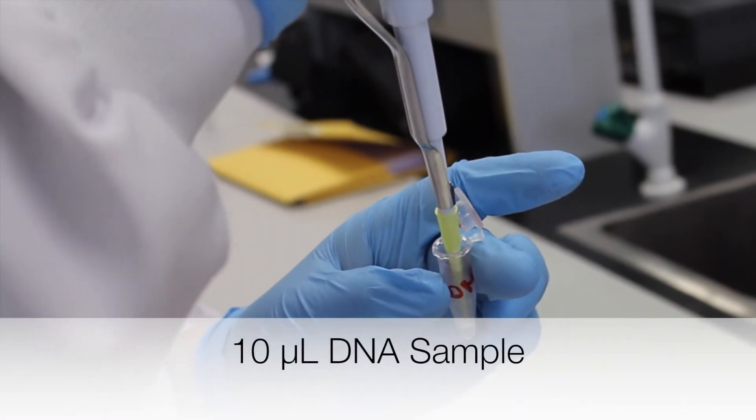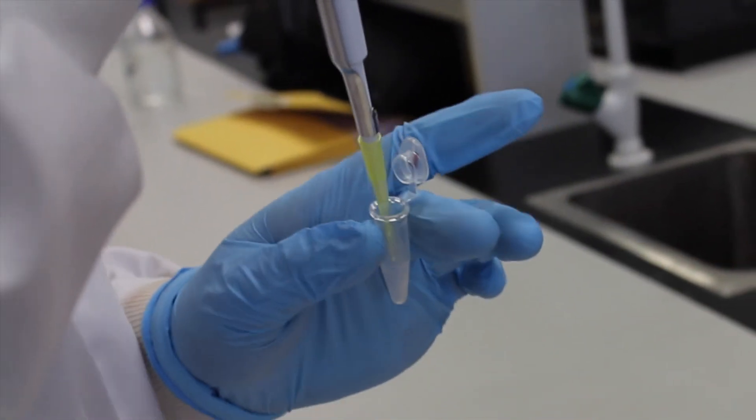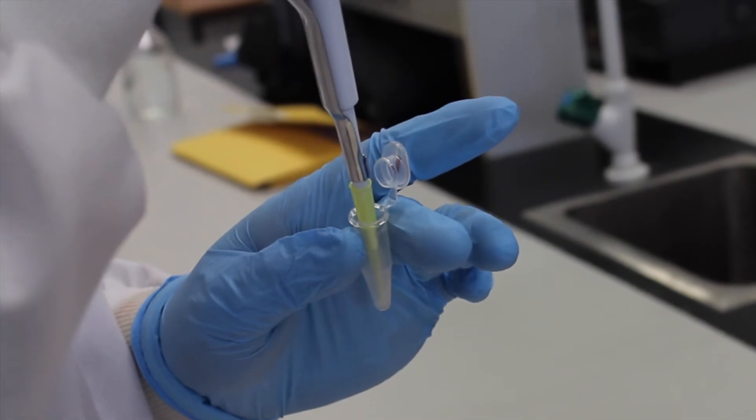10 microliters of a DNA sample is transferred into properly labeled Eppendorf tubes. This DNA has previously been mini-prepped. To view the tutorial on mini-prep, please click on the link provided.